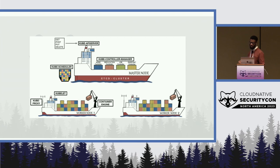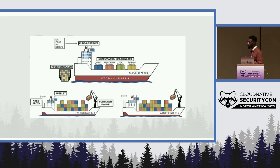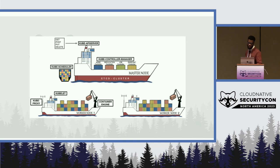Then you have your Kubernetes proxy, which is a component that runs on each worker node and is responsible for maintaining the network rules on the node and for forwarding traffic to the correct pods. Then etcd is a distributed key store used by Kubernetes as a backing store for all its cluster data.